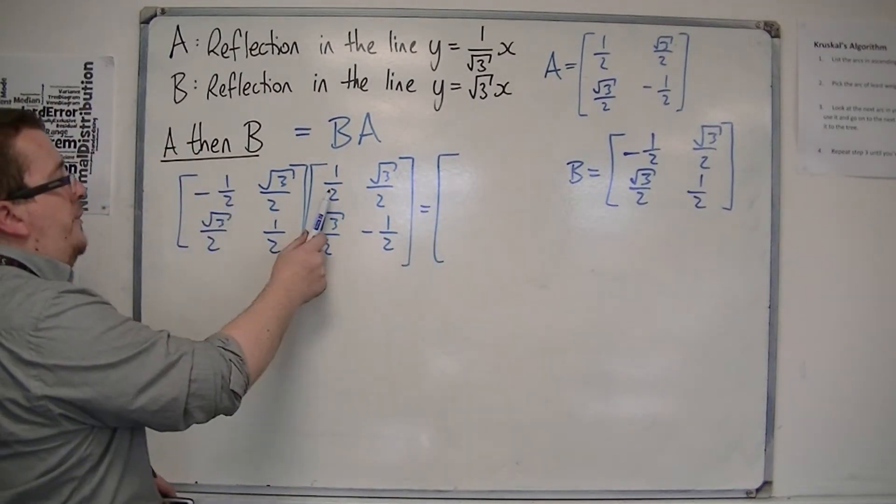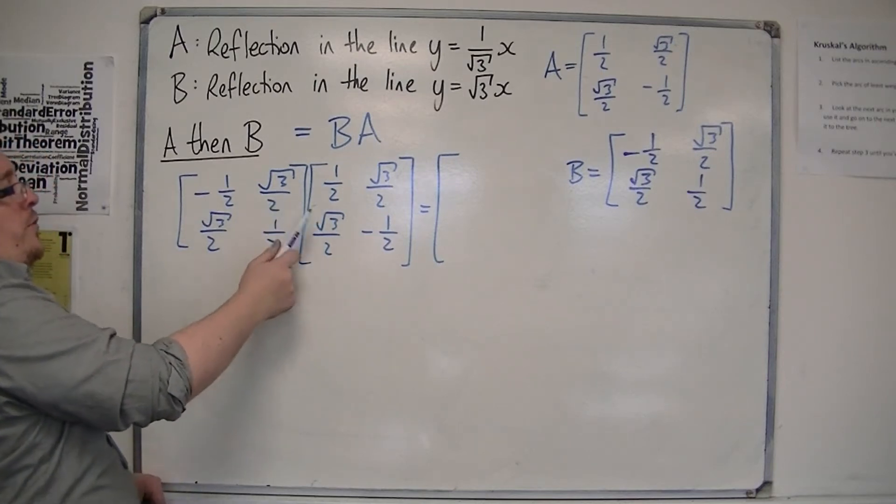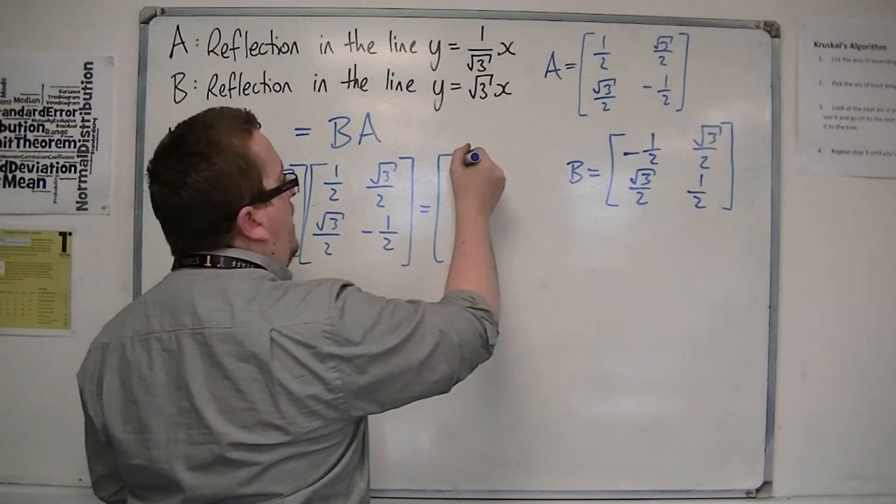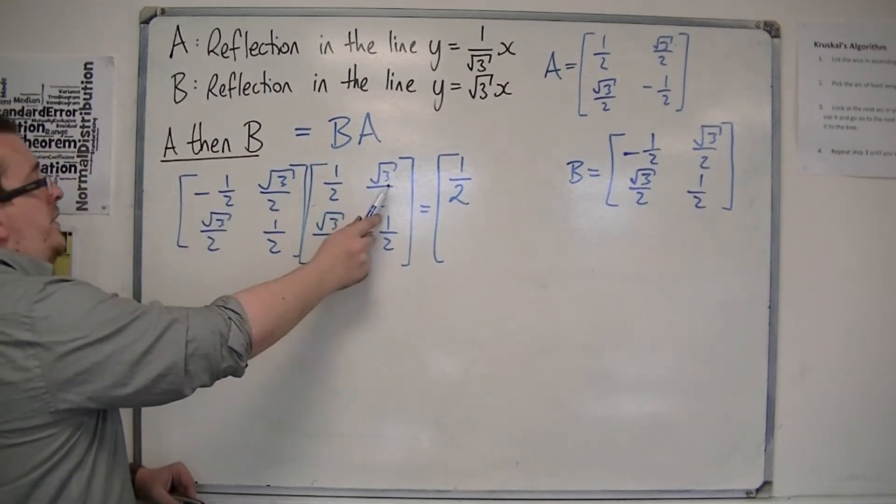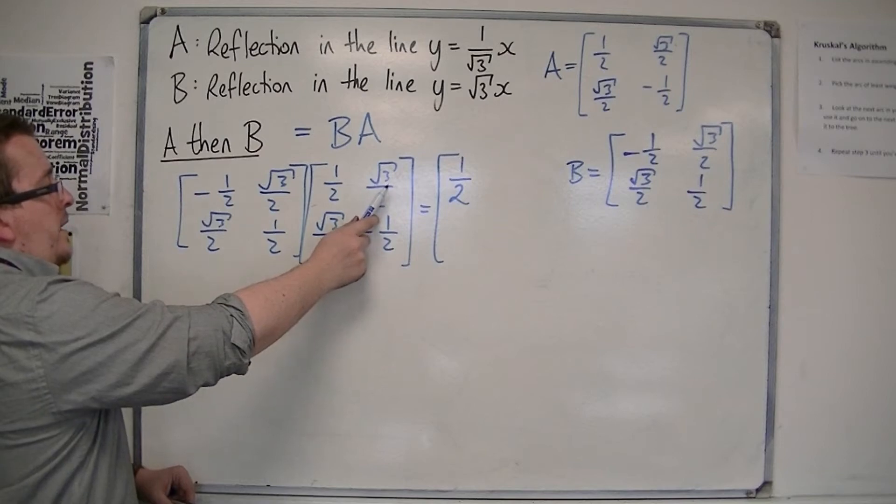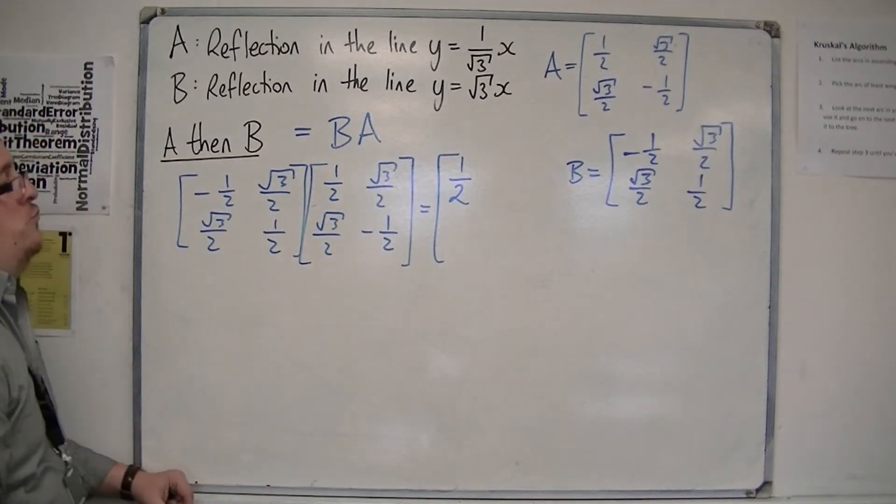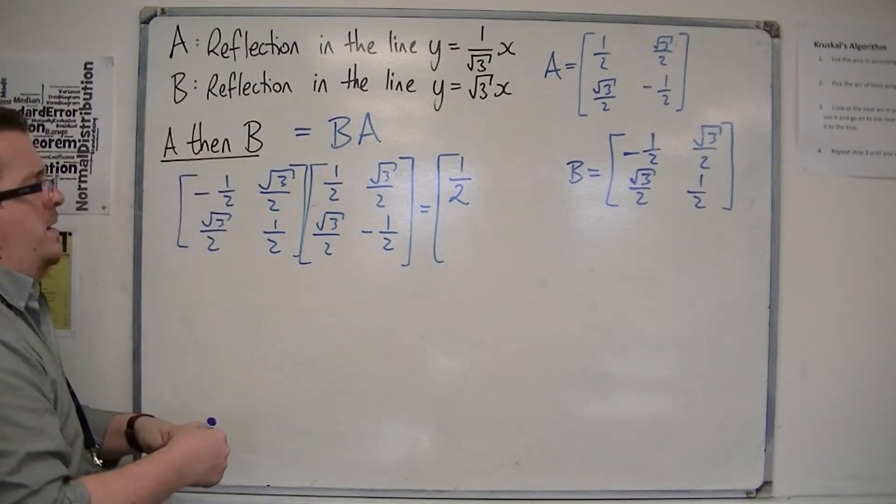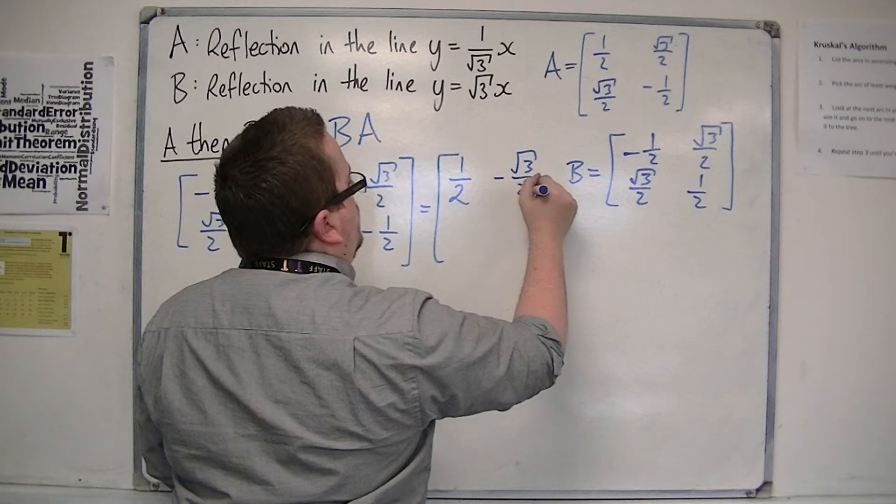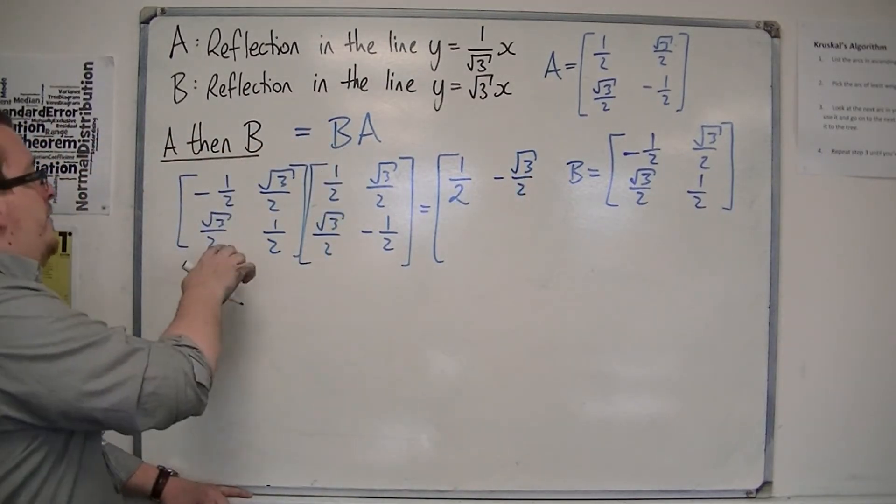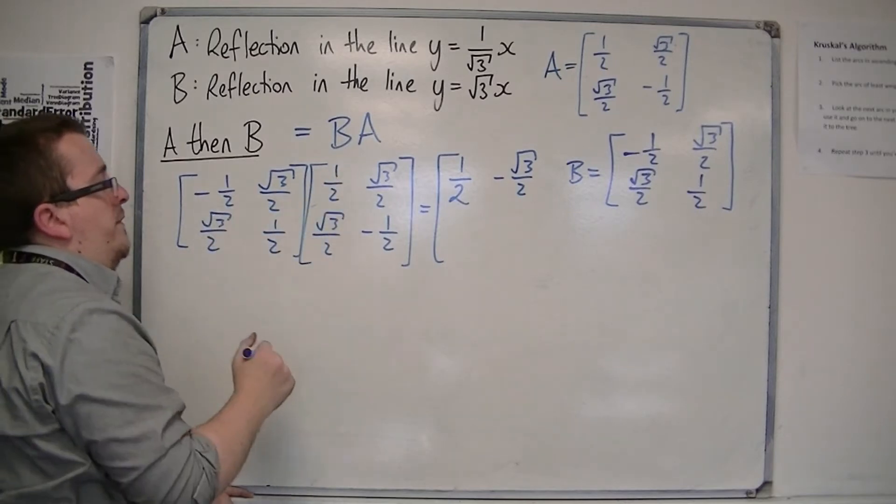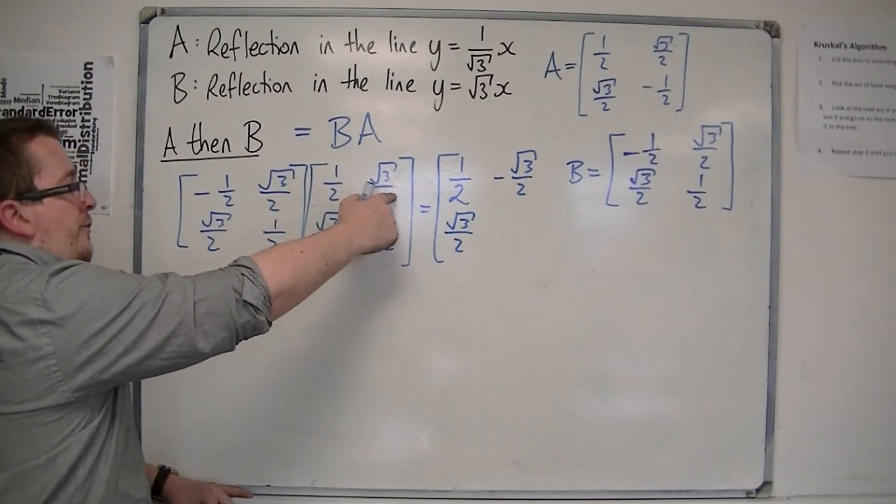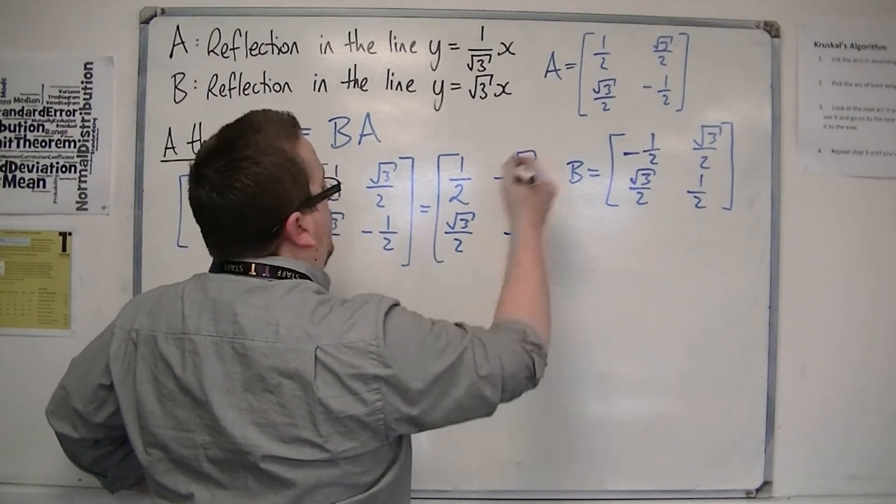We have minus 1 half times 1 half, so that's minus 1 quarter. Then, we've got root 3 over 2 times root 3 over 2, it's 3 quarters. Minus 1 quarter plus 3 quarters is 1 half. Then, we've got minus 1 half times root 3 over 2, so that's minus root 3 over 4. Then, minus another root 3 over 4. That'd be minus root 3 over 2. Then, we've got root 3 over 2 times 1 half, so that's root 3 over 4. Plus another root 3 over 4, so that's root 3 over 2. And then, we've got root 3 over 2 times root 3 over 2, so that's 3 over 4. And then, take away 1 quarter, so it's 1 half.